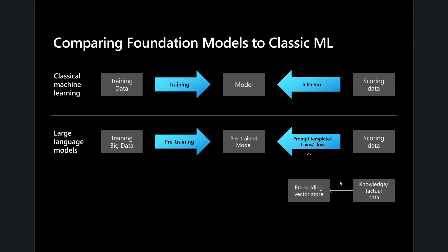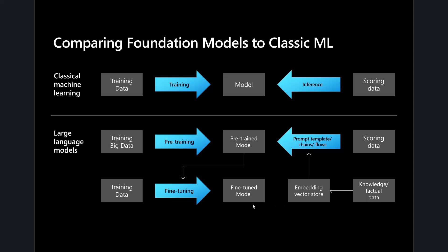We also have the concept of a fine-tuned model, where we take a set of training data and adapt the model using it. This is a much smaller data set compared to classic machine learning — perhaps a thousand records of specific questions and answers — provided to the fine-tuning process, which creates a new fine-tuned model more adapted to our use case. We still use prompt templates to do inferences and may include additional augmented data. It's more complex, much more powerful, but there are a few more places where there's risk.